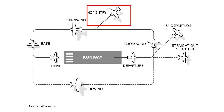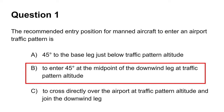The preferred way for the aircraft to enter the traffic is at a 45 degree angle to the downwind leg, heading somewhere towards the midpoint of the runway. Hence, this makes B the answer to the question.